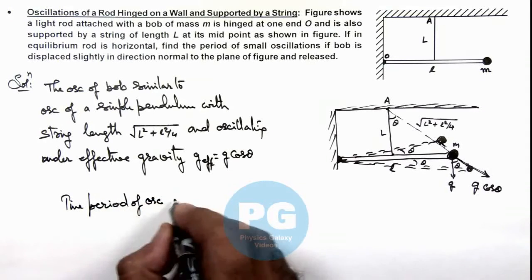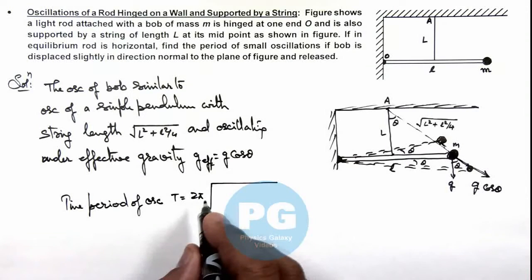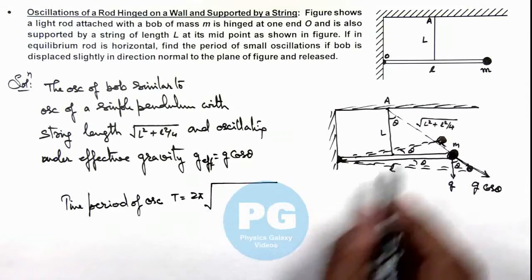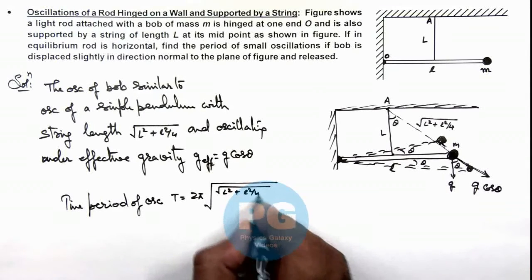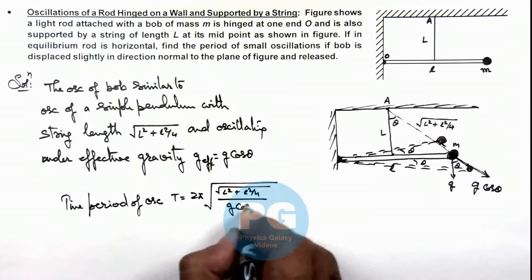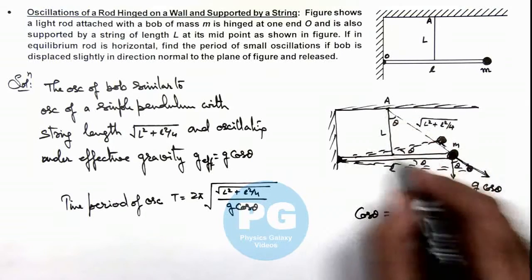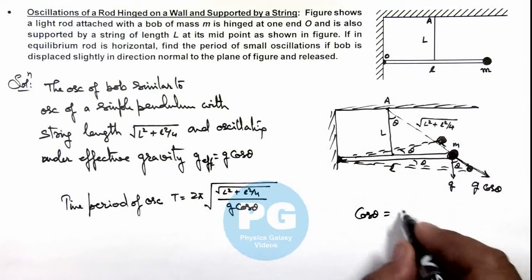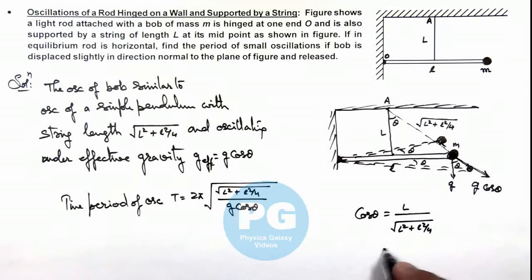The time period of oscillation for this pendulum bob is equal to 2π times the square root of this length, which is √(L² + L²/4) divided by g cos θ. The value of cos θ we can also calculate from this triangle, which is given as L/√(L² + L²/4), which can be written as 2L/√(4L² + L²).